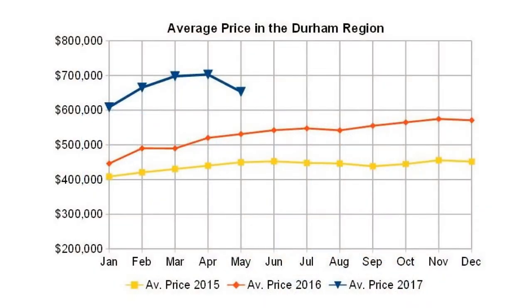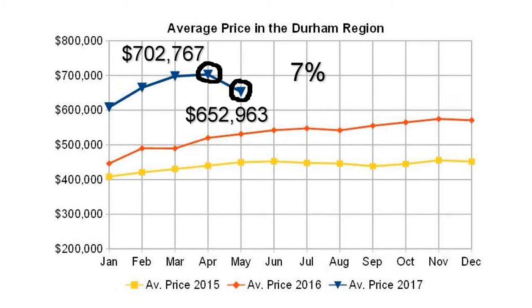More supply, less demand, which resulted in a price drop from $702,767 in April to $652,963 in May for an average home in Durham region. That was a drop of 7% in prices between May and April.